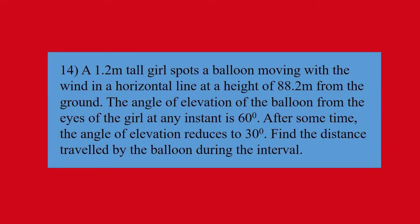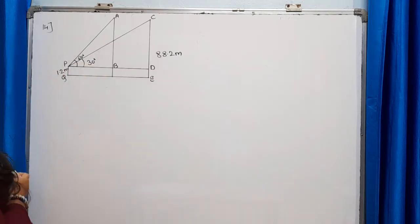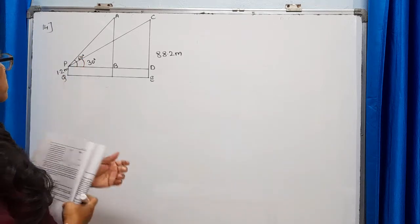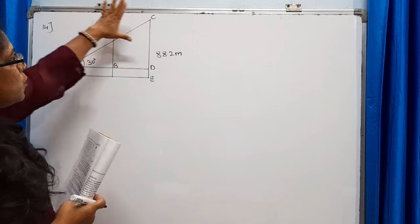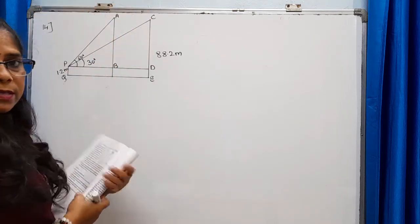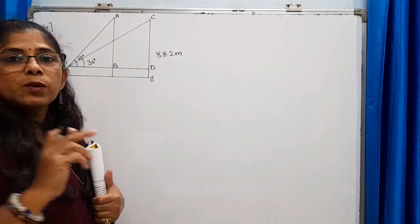Problem number 14: A 1.2 meters tall girl spots a balloon moving with the wind in a horizontal line at a height of 88.2 meters from the ground. The angle of elevation of the balloon from the eyes of the girl at any instant is 60 degrees. After some time, the angle of elevation reduces to 30 degrees. Find the distance traveled by the balloon during the interval.